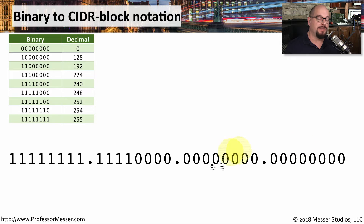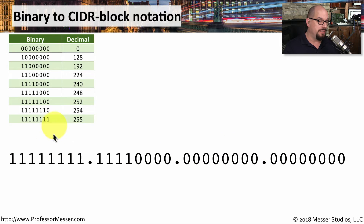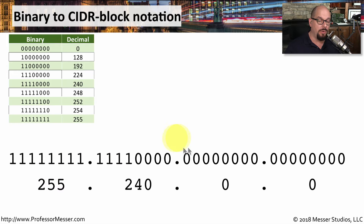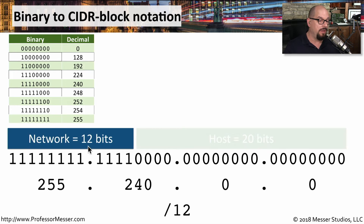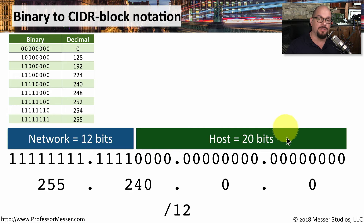Let's take the subnet mask we used before, which was all ones in the first octet and four ones in the second octet, and zeros after that. We know that all ones, looking at our chart, is 255, and four ones and four zeros is 240. So the subnet mask would be 255.240.0.0. We know that there are 12 ones, so the subnet mask will be a slash 12 CIDR block address, giving us 12 bits for the network and 20 bits for all of the hosts on each network.